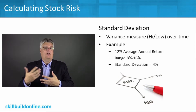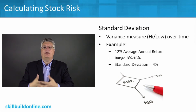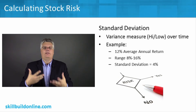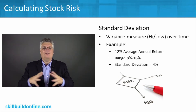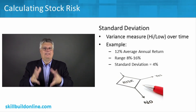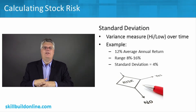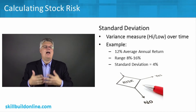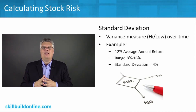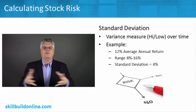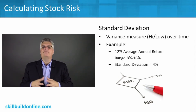Standard deviation is not comparing to an index or anything external — beta actually does that. It's comparing the investment to its own measurements, its own range of highs and lows. You're really trying to look for that variance, that deviation from the standard or the mean — the average. For example, if you have a 12% average annual return over a period of time, like three or five years...